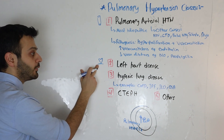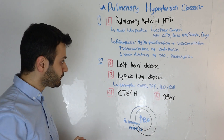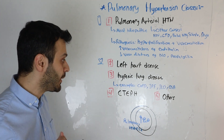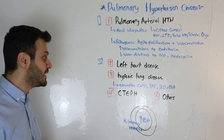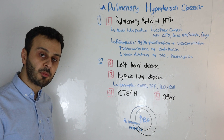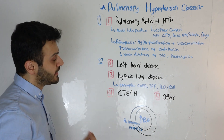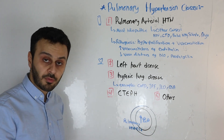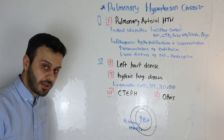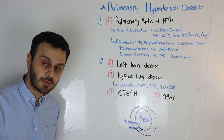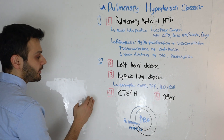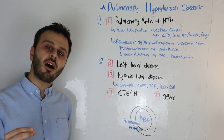Class 3 is when the source of pulmonary hypertension is a hypoxic lung disease. To remember this: class three — problem in the respiratory tree. It rhymes well.